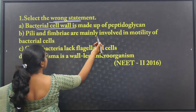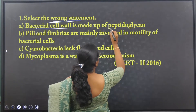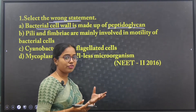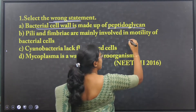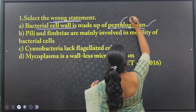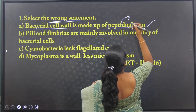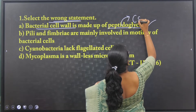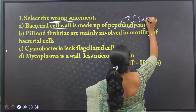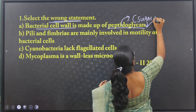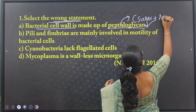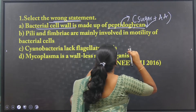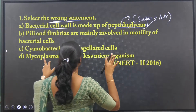Bacterial cell wall is made up of peptidoglycans. Yes, of course this statement is correct. Peptidoglycans are made up of sugars and amino acids — sugar plus amino acids. So the first statement is correct.